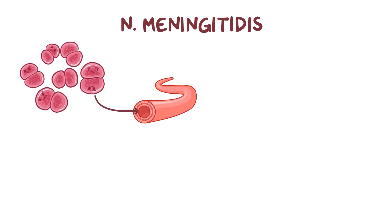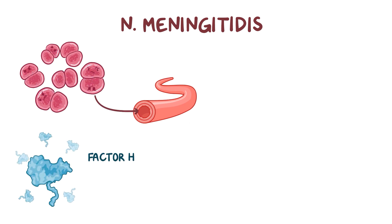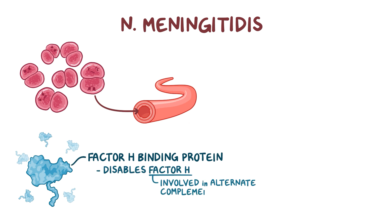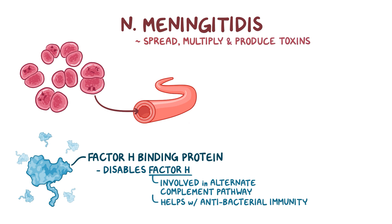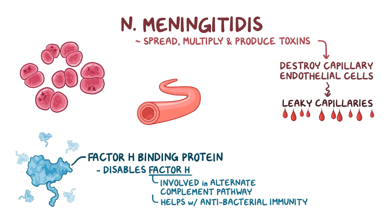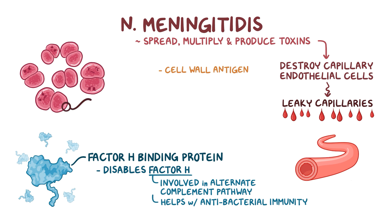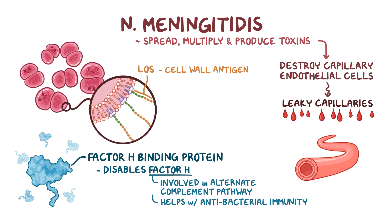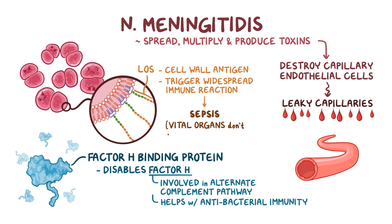Inside the bloodstream, N. meningitidis uses another toxin called factor H binding protein, which disables factor H, a protein involved in the alternate complement pathway, which plays a role in antibacterial immunity. This allows N. meningitidis to spread, multiply, and produce toxins in the bloodstream, causing destruction of the capillary endothelial cells, which results in leaky capillaries. N. meningitidis also has a cell wall antigen called lipooligosaccharide, or LOS, which can trigger a widespread immune reaction that results in sepsis, meaning blood vessels dilate so blood pressure drops and vital organs don't get enough blood.